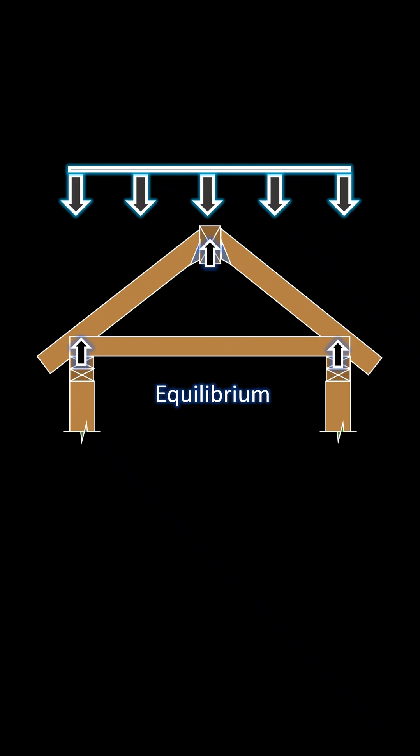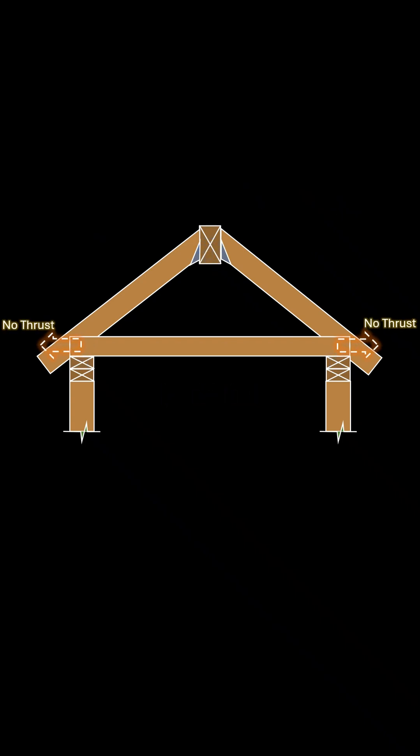Since there is no outward thrust at the base as we saw with conventional framing, there is no need to tie the rafter to continuous ceiling joists.